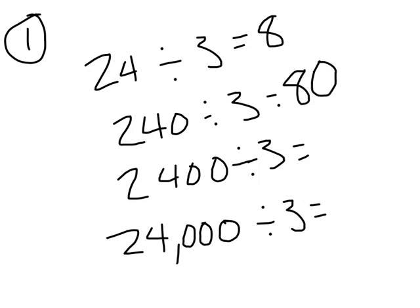When I divide 2,400 divided by 3, that's dividing 24 hundreds by 3. How many hundreds would that give me? That would give me 8 hundreds. Write that number in standard form — it's 800.